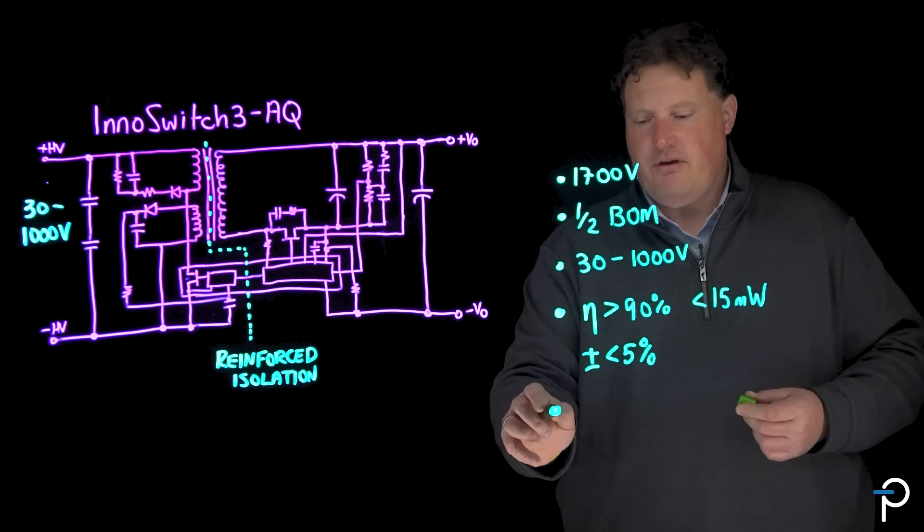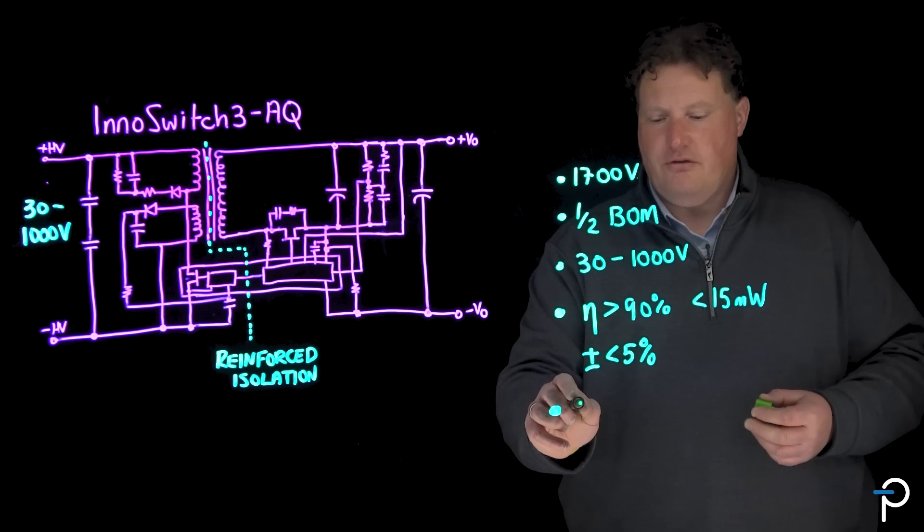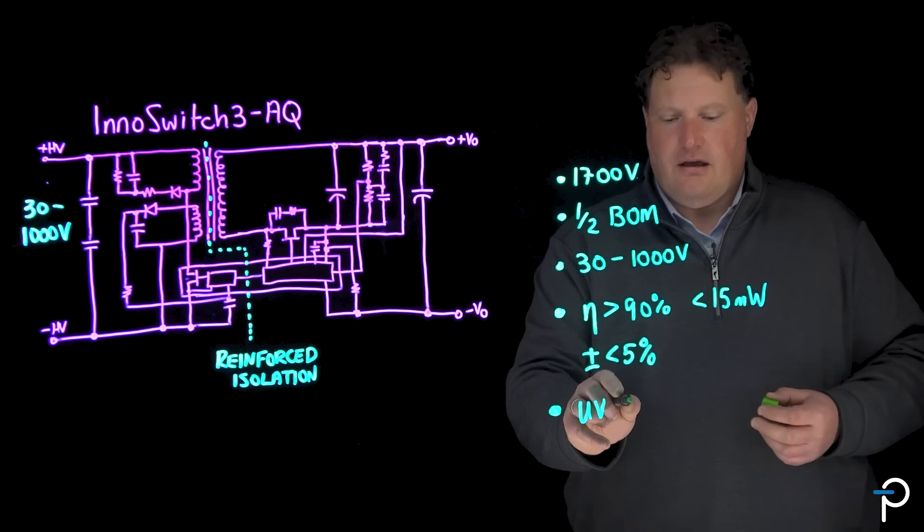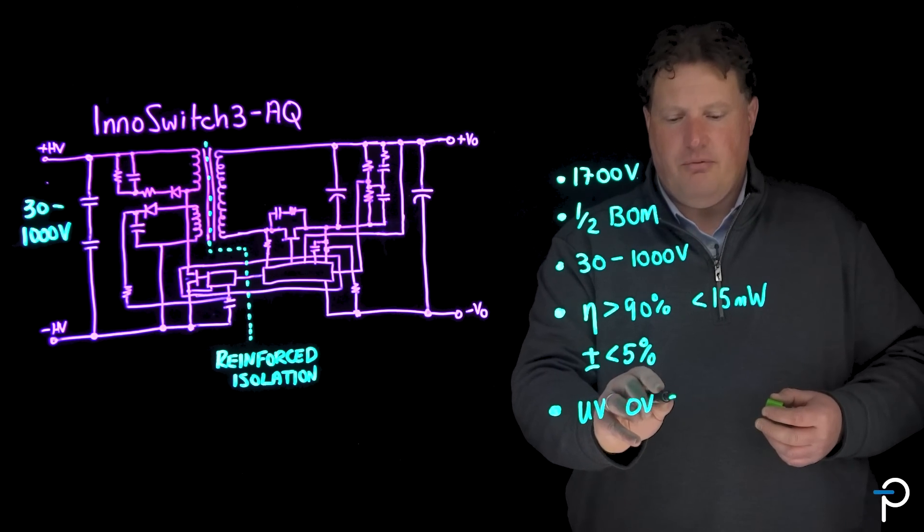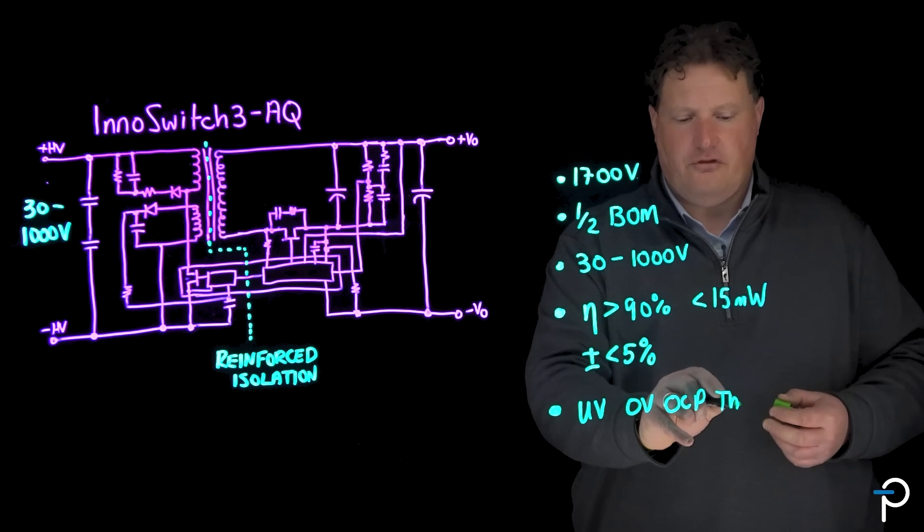The InnoSwitch3-AQ family has a series of layered protection features, including line undervoltage, output overvoltage, output overcurrent, and thermal shutdown.